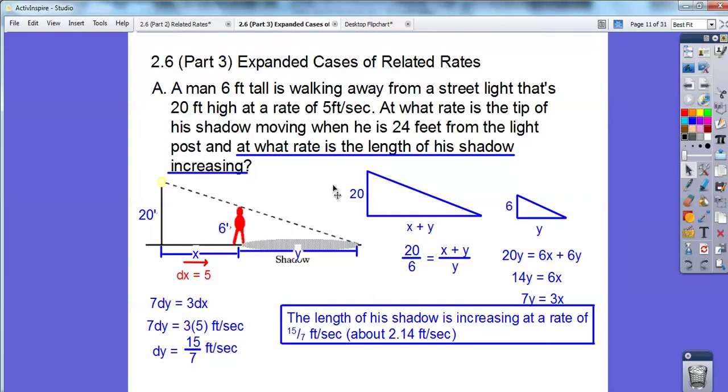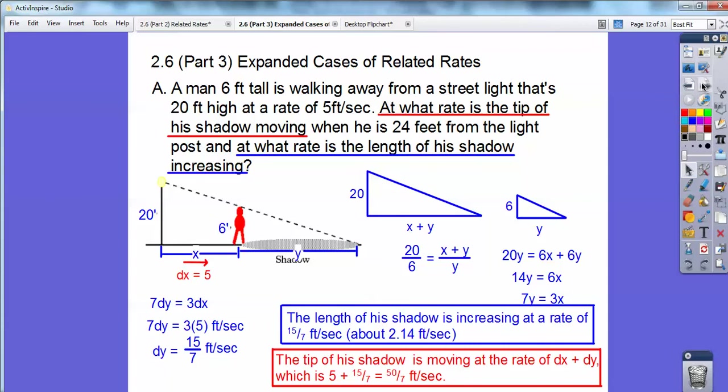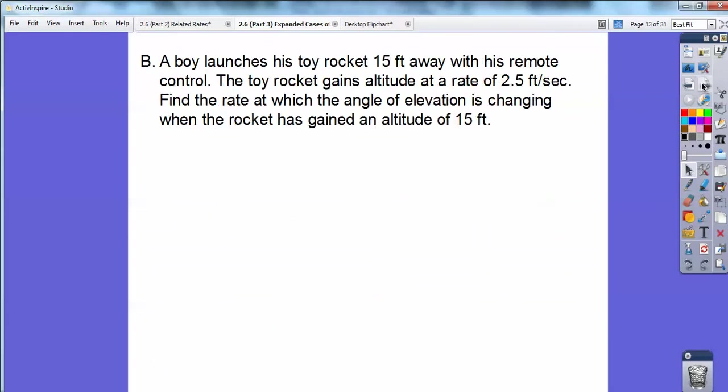Now, as this shadow is increasing at that amount, and he's walking at this amount, then this tip of this shadow is moving at the amount of X plus Y, or DX plus DY. So I just add those related rates, DX and DY together, and I find out that the tip of his shadow is moving at the rate of 5 sevenths feet per second, which is 7 point something.